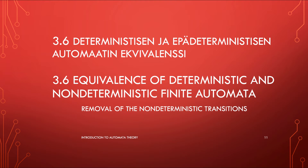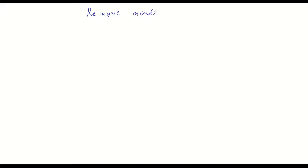We continue in this video our discussion about how to build a deterministic finite automaton equivalent with a given non-deterministic automaton. In the last lecture, we took a look at how to remove epsilon transitions. So I'm going to pick it up from there, and I'm going to assume now that the non-deterministic automaton I have is one that has no epsilon transitions. The only remaining thing for me to do to prove the result is to show how to remove non-determinism.